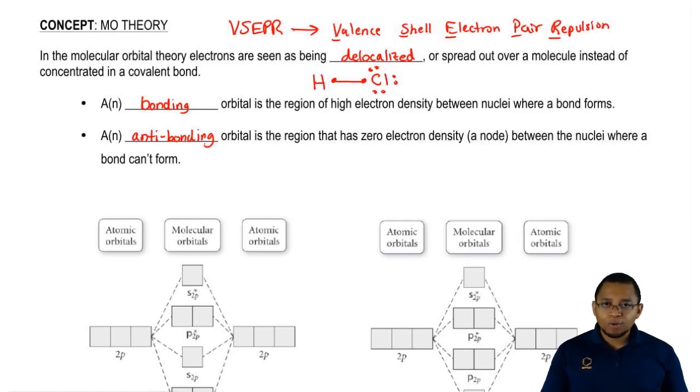These two bonding forces are basically fighting against one another. If bonding forces are greater, the bond forms. If anti-bonding forces are greater, the bond doesn't form. If they're equal, the bond doesn't form. We want the bonding forces to always be greater so that a bond can be made.